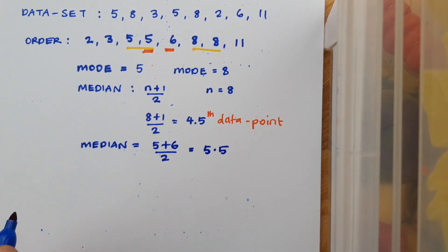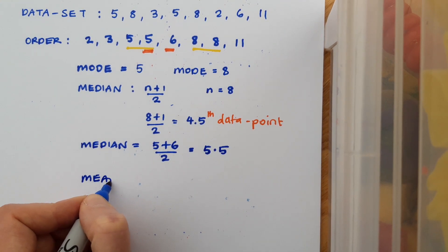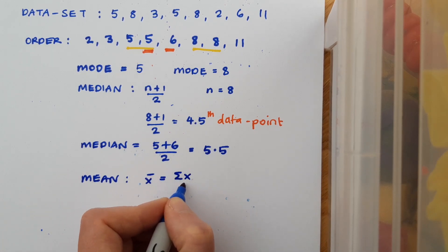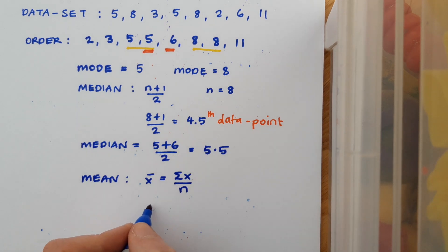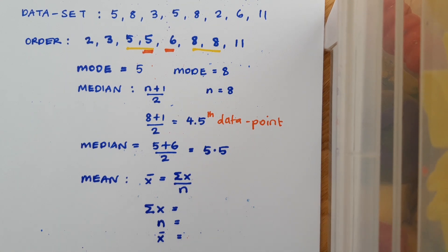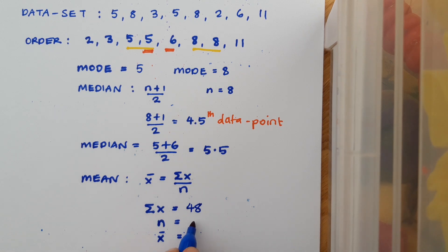Finally, I want to calculate the mean. Whenever there's a formula, it's a good plan to make a note of it: summation x over n. Don't forget, I'm going to lay it out like this: summation x, n, and x-bar. Summation x is just adding up all my pieces of data. In this case, the data adds up to 48, and there are 8 pieces of data. And so my mean is 48 divided by 8, which is just 6.